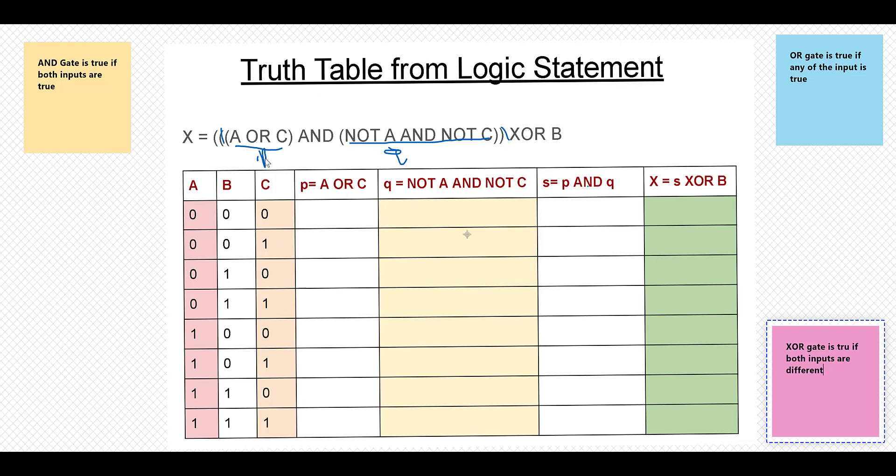Then whole s XOR b is in the last column. So do remember, OR gate is true if any of the input is true, XOR gate is true if both inputs are different, and AND gate is true if both inputs are true.